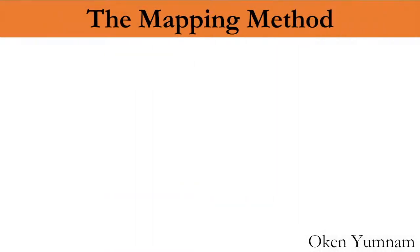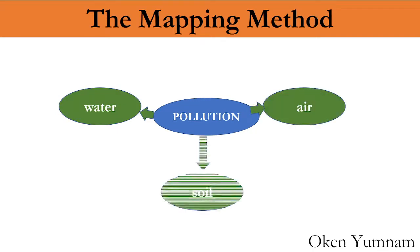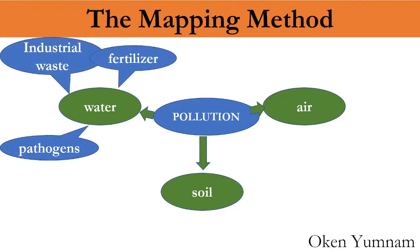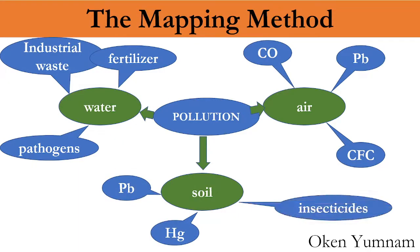For example, suppose today's lecture is about pollution. You can have subtopics: water pollution, air pollution, and soil pollution. For water pollution we may have pollutants like pathogens, industrial waste, fertilizer. For air pollution we may have carbon monoxide, lead, chlorofluorocarbons. For soil pollution we may have lead, mercury, and insecticides. Like this it will go on branching. This is the mapping method or mind mapping.